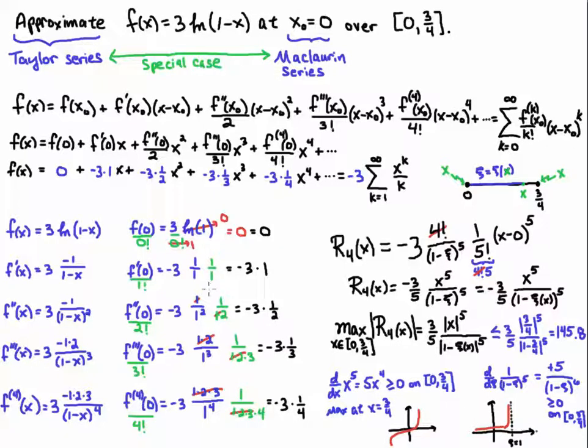That means that 3 fourths is going to give us the maximum bound. So I plug 3 fourths into this expression here. Now this is xi of 3 fourths, but because of this analysis, I'm just going to make xi be 3 fourths. And so then this will be less than or equal to 145.8. As you'll see, that's a ridiculously high estimate, but that is the bound on the error.